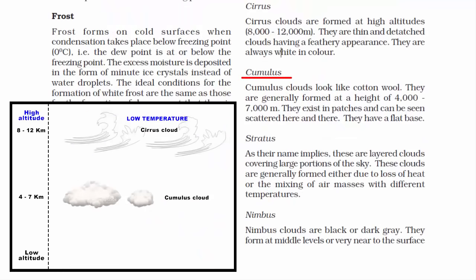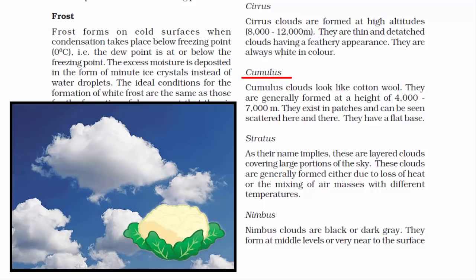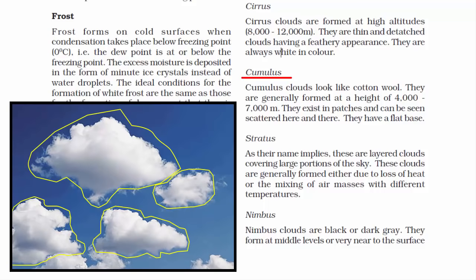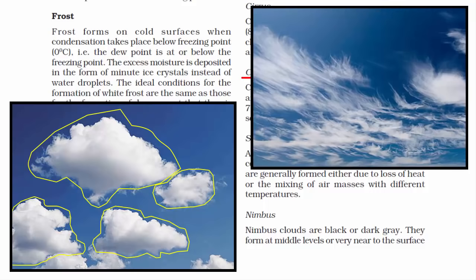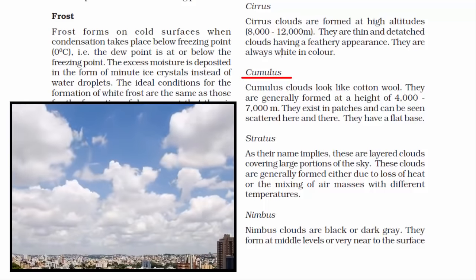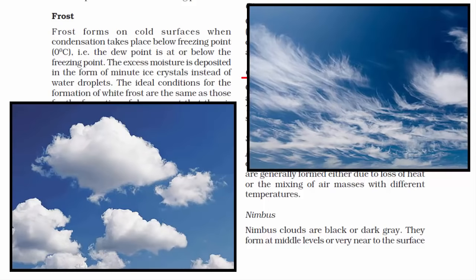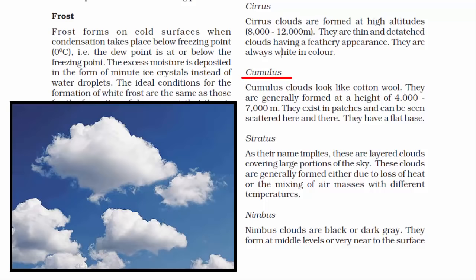The second type is cumulus cloud. These clouds are formed at a height of 4 to 7 kilometers — lower than cirrus clouds but still very high up in the sky. These clouds are fluffy like cotton but have a flat base, looking like a piece of cotton floating in the air, somewhat resembling a cauliflower. They usually appear in patches scattered here and there. Since cumulus clouds are bigger than cirrus clouds, they contain more water vapor and water droplets or ice crystals. If patches come close and combine into a big cloud, it may rain heavily.